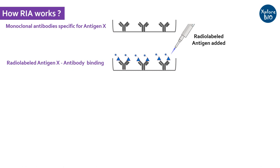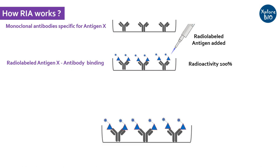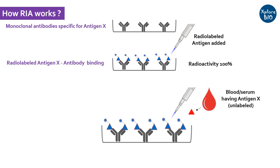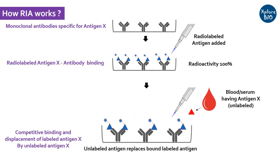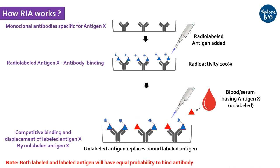If you measure the radioactivity at this point, it will be 100%. In the next step, the unlabeled antigen X from the patient's serum sample is added to the ELISA plate. This results in the competitive binding of unlabeled antigen and labeled antigen X to the fixed antibodies. As a result, some of the labeled antigen will be replaced by unlabeled antigen X. Upon measuring the radioactivity, you will see a decrease which corresponds to the amount of antigen X in the sample.